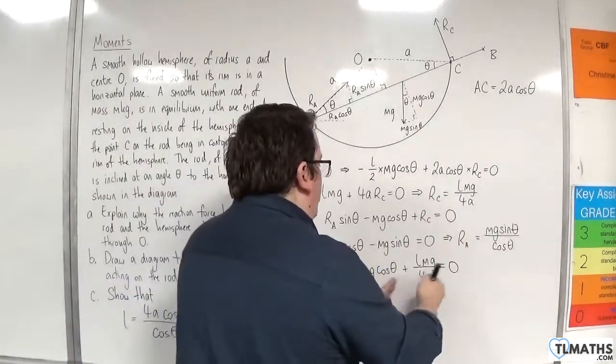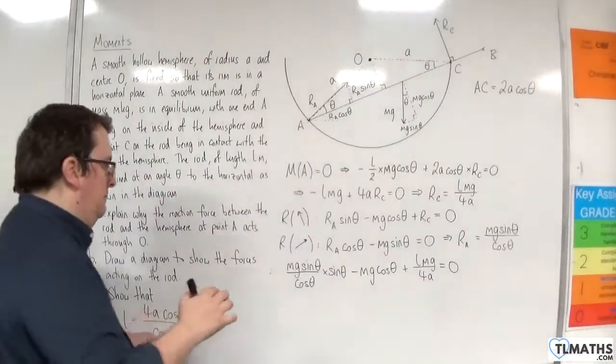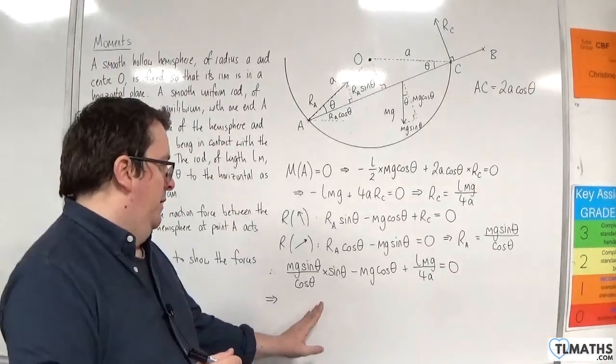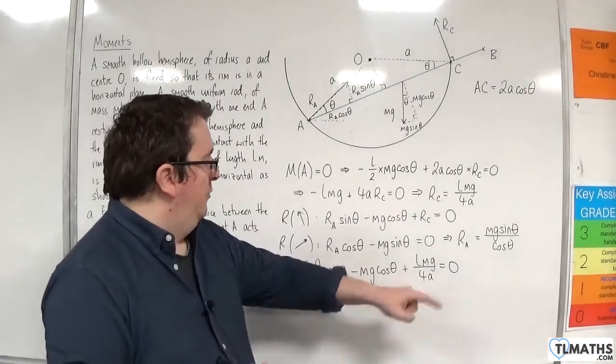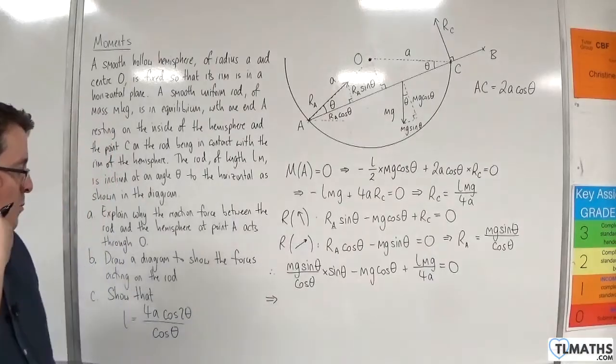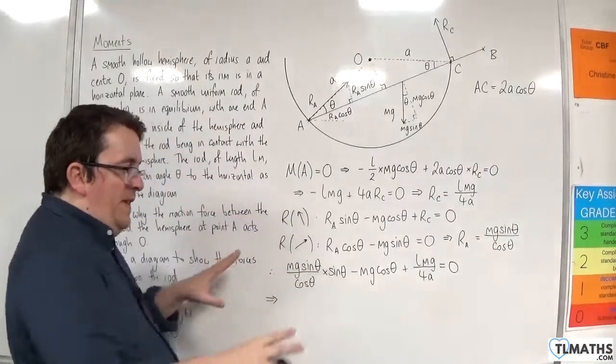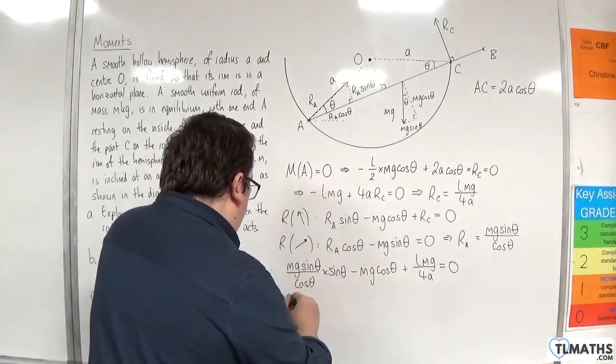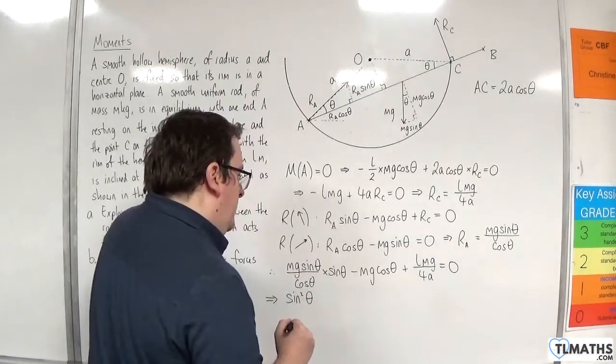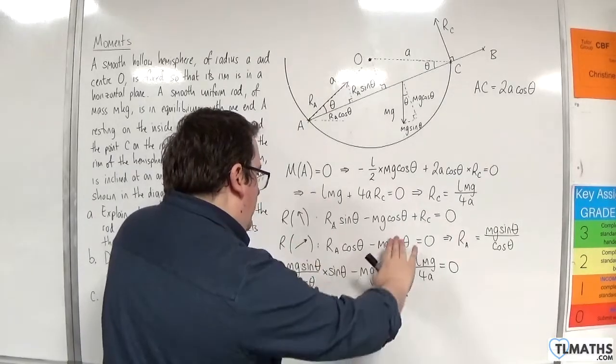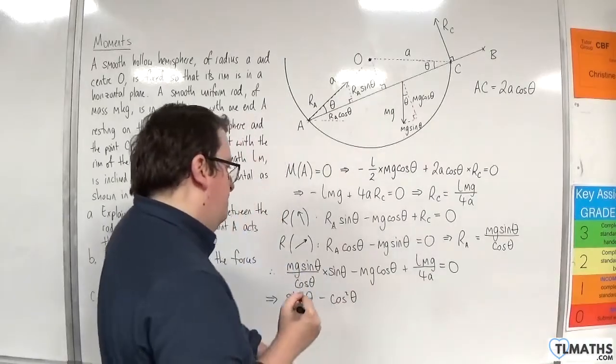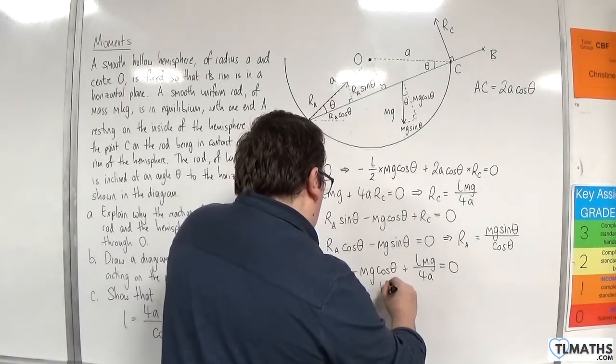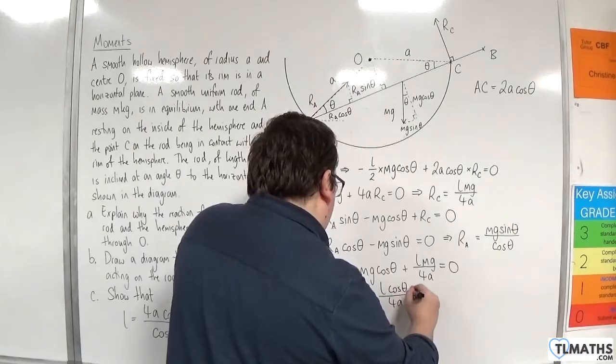Now, all three terms have M G involved. So I can divide through by M G. And I can multiply through by cosine theta to get rid of it from the denominator here. So I'll divide through by the M G and multiply through by cosine theta. So we'll have sine theta times sine theta left, so sine squared theta. Take away the M G's gone. I've multiplied through by cosine theta. So I'll have take away cosine squared theta. And over here, I'm going to get L cosine theta over 4 A equals 0.